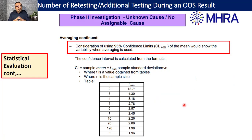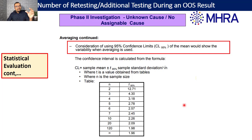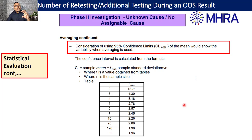In addition to percent RSD, the same MHRA guideline discusses evaluation of the 95% confidence limit. You must confirm that both the upper and lower values — once you calculate the 95% confidence limit, you get two values, one on the upper side and one on the lower side — these values should not fall outside your defined specification.